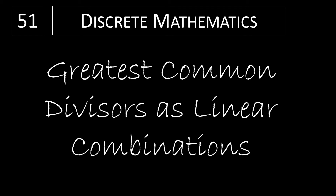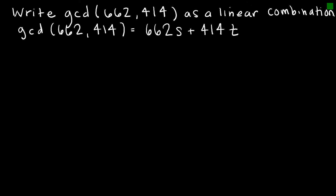In this video, we're going to continue to explore Euclid's algorithm and find the greatest common divisor written as a linear combination. A linear combination is something that you will see over and over throughout your mathematical study, so make sure you pay attention. I want to find the greatest common divisor of 662 and 414, and then use that to write the value as a linear combination, which follows this format where essentially I'm taking the two values times some other integer.